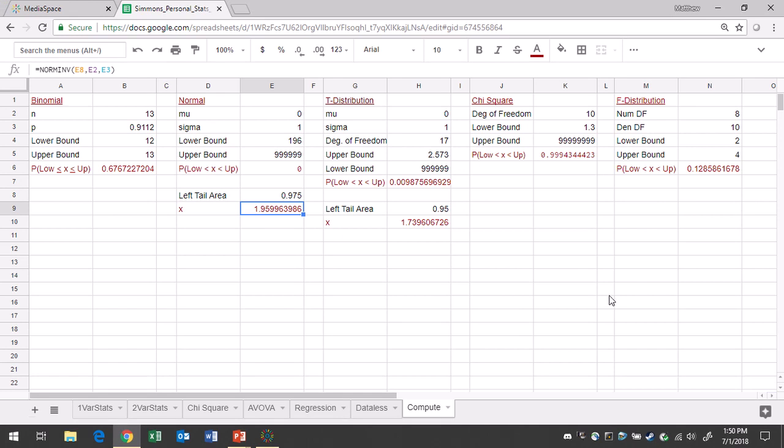So in Google Sheets you want to make sure you go to the compute tab. The mean is 0, standard deviation is 1. And then all you need to do is type in the left tailed area which is 0.918. Push enter.